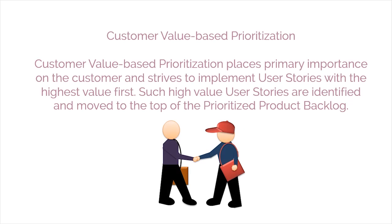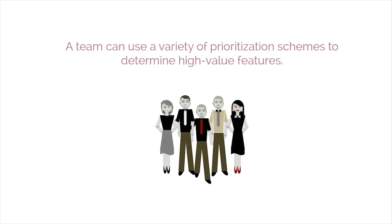The second method is customer value-based prioritization. Customer value-based prioritization places primary importance on the customer and strives to implement user stories with the highest value first. Such high-value user stories are identified and moved to the top of the prioritized product backlog. A team can use a variety of prioritization schemes to determine high-value features.